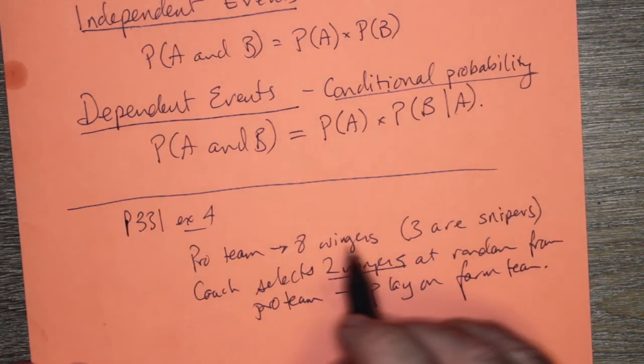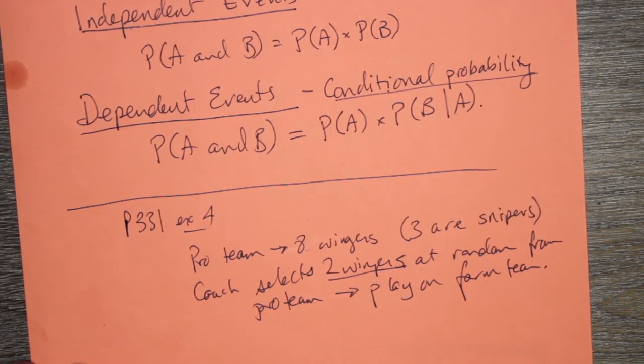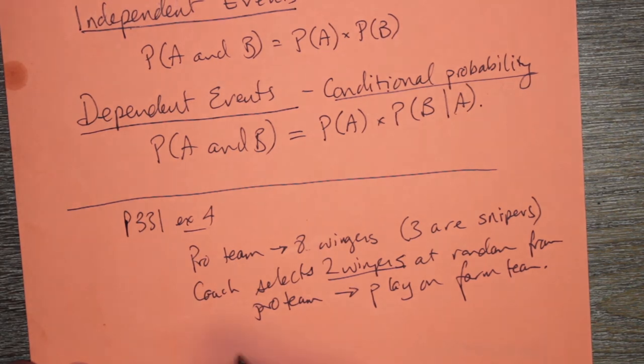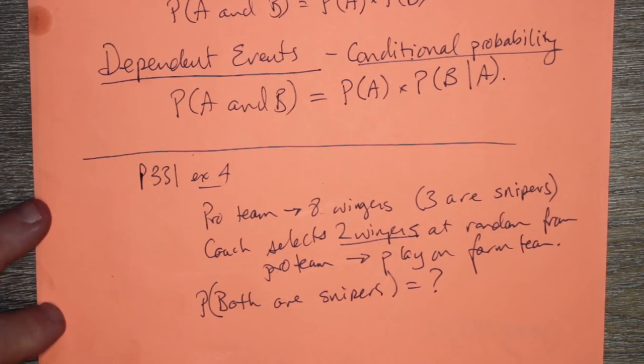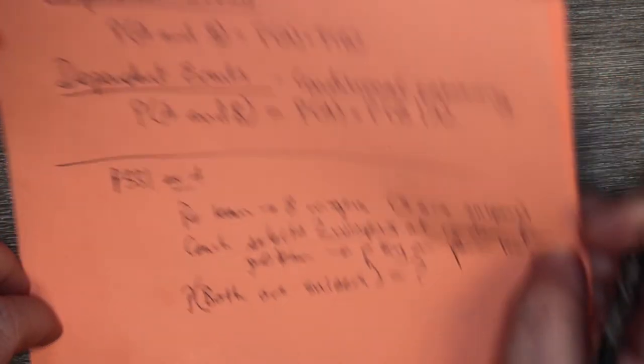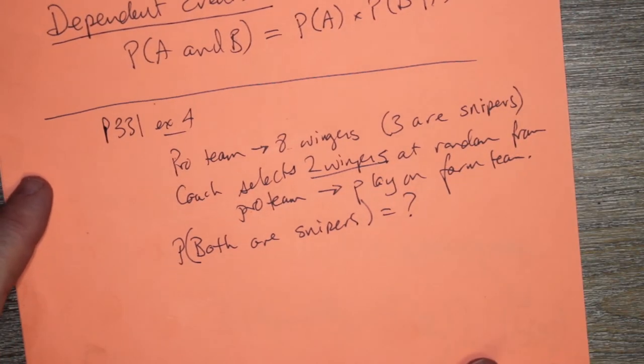That's two wingers. Now that's two out of eight wingers and three are snipers. So what's the probability that both are snipers? So that's kind of a cool question. So you think about how these events happen.